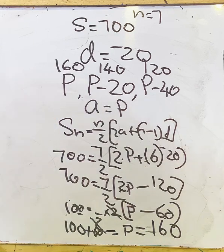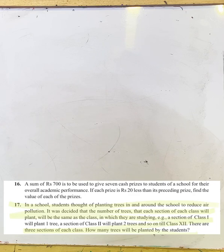Next question: In a school, students thought of planting trees in and around the school to reduce air pollution. It was decided that the number of trees that each section of each class will plant will be the same as the class in which they are studying. For example, a section of Class 1 will plant one tree, a section of Class 2 will plant two trees, and so on till Class 12. There are three sections of each class.